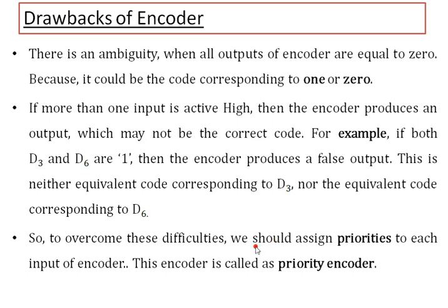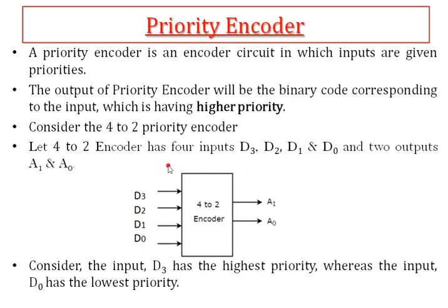To overcome these difficulties we assign priorities to the inputs of the encoder. The priority encoder is the same as a normal encoder except we give priorities to the input values, and the output is generated based on priority. I am taking a 4-to-2 priority encoder with 4 inputs and 2 outputs. Priority is assigned from top to bottom: D3 has highest priority, then D2, D1, and D0 has least priority.